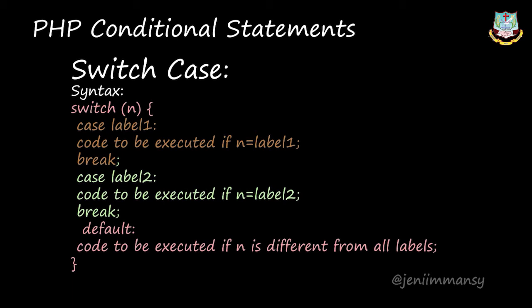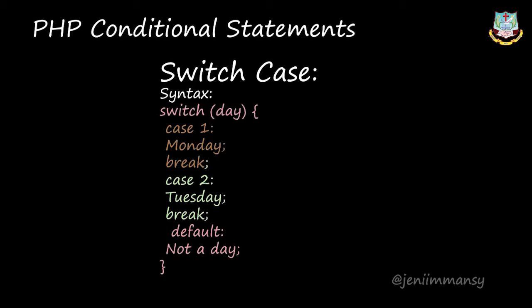For a simple example, switch of days: case one — Monday, break; case two — Tuesday, break; case three — Wednesday, break; and default — 'not a day.' If you input one, it displays Monday; if two, Tuesday. If you have seven days and give a number other than one through seven — like zero, eight, or nine — it will display 'not a day', whatever statement you give in the default section.